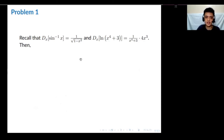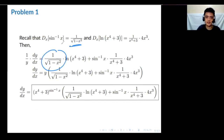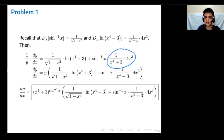We need to find two derivatives: the derivative of arcsin(x) is 1 over the square root of 1 minus x squared. And the derivative of ln(x⁴ + 3) is just the reciprocal of the inside times the derivative of the inside. Substituting these back into the equation, we copy our results accordingly.